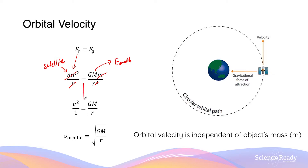This gives us a simpler expression where v squared — the linear velocity of the satellite in circular motion — equals GM, where capital M is the mass of the Earth, divided by r. By square-rooting both sides, we obtain an expression for the orbital velocity of the satellite, which equals the square root of GM over r. The orbital velocity is directly proportional to the mass of the Earth and inversely proportional to the distance between the satellite and the centre of the Earth.